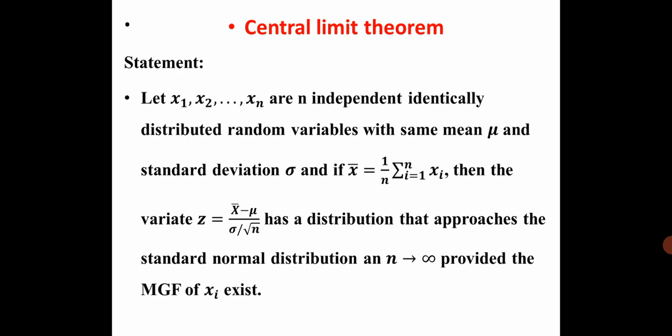First of all, we have to see the statement of Central Limit Theorem. Let x1, x2, ... xn be n independent, identically distributed random variables with the same mean mu and standard deviation sigma. And if x-bar equals 1/n times sigma from i=1 to n of xi, then the variate z equals (x-bar minus mu) divided by (sigma over root n) has a distribution that approaches the standard normal distribution as n tends to infinity, provided the mgf of xi exists.